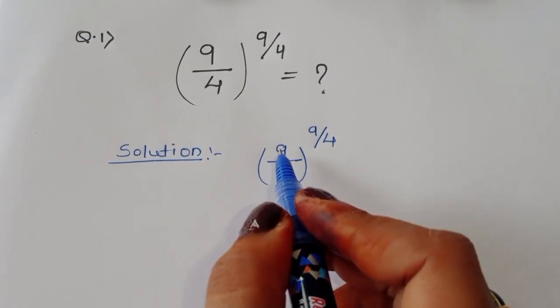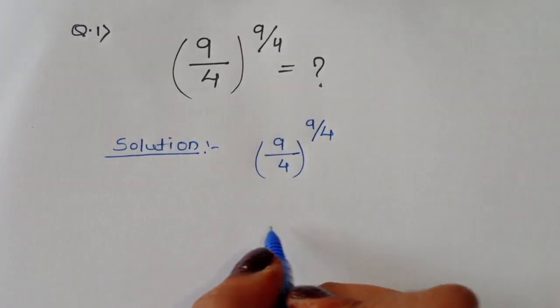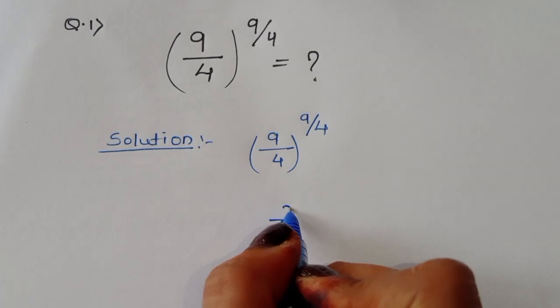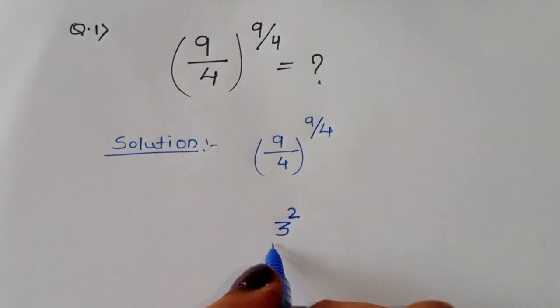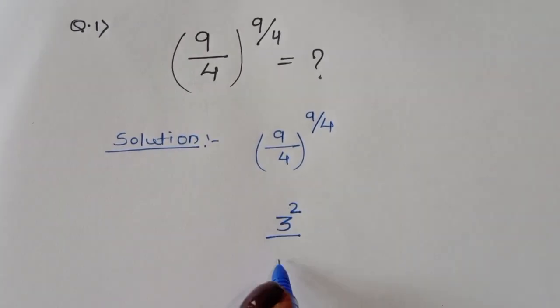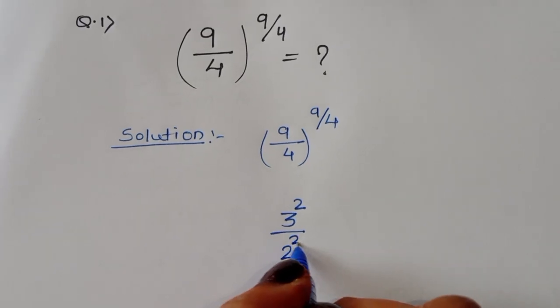This 9 we can convert into power form: 3 power 2. So 3 power 2 is 9 divided by 4, and 2 power 2 is the denominator.